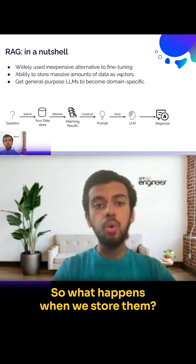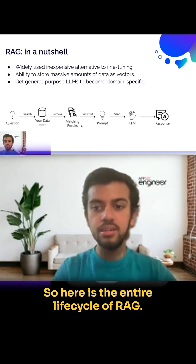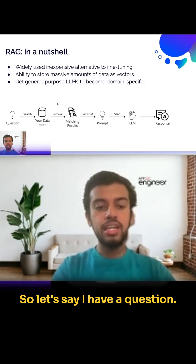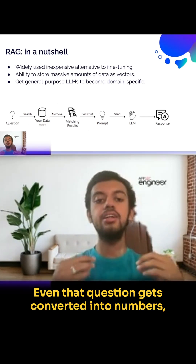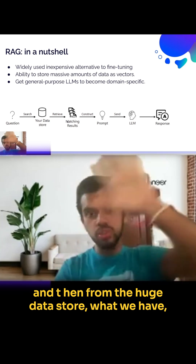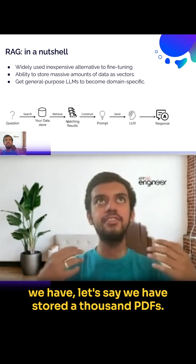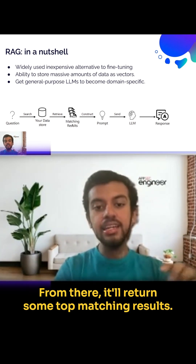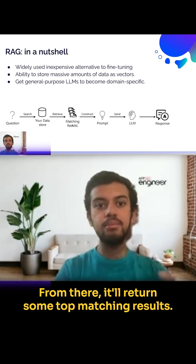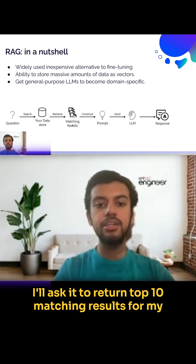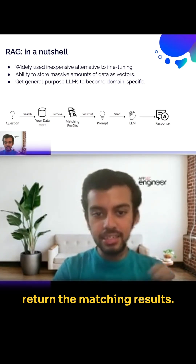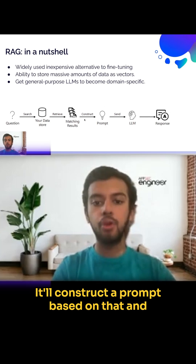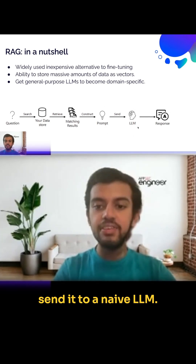Here is the entire lifecycle of RAG. When you have a question, that question gets converted into numbers. Then, from the huge data store — say a thousand stored PDFs — it returns the top matching results. You can ask it to return the top 10 matching chunks that contain the answer to your question.